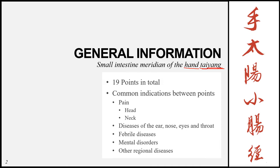This meridian has 19 points in total, and the common indications between points are for pain of the head and neck. This is because of the flow of the meridian traveling along both the head and neck. Secondly, it can treat conditions of the ears, nose, eyes, and throat — again because of the flow of the meridian, which we'll talk about in detail in the next slides.